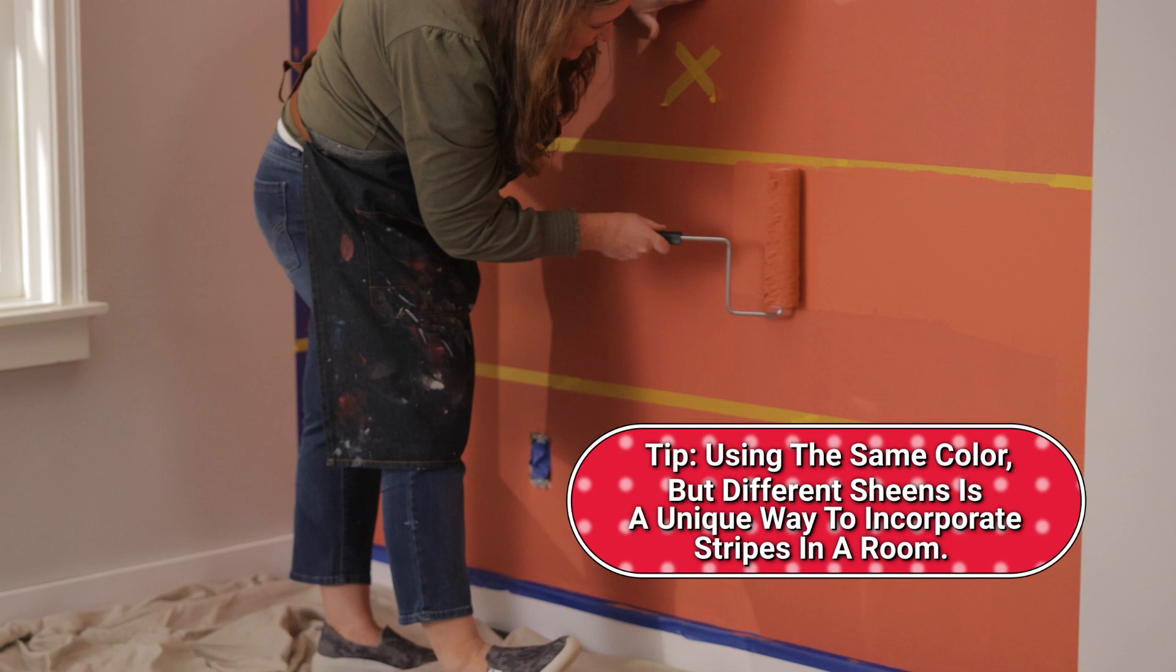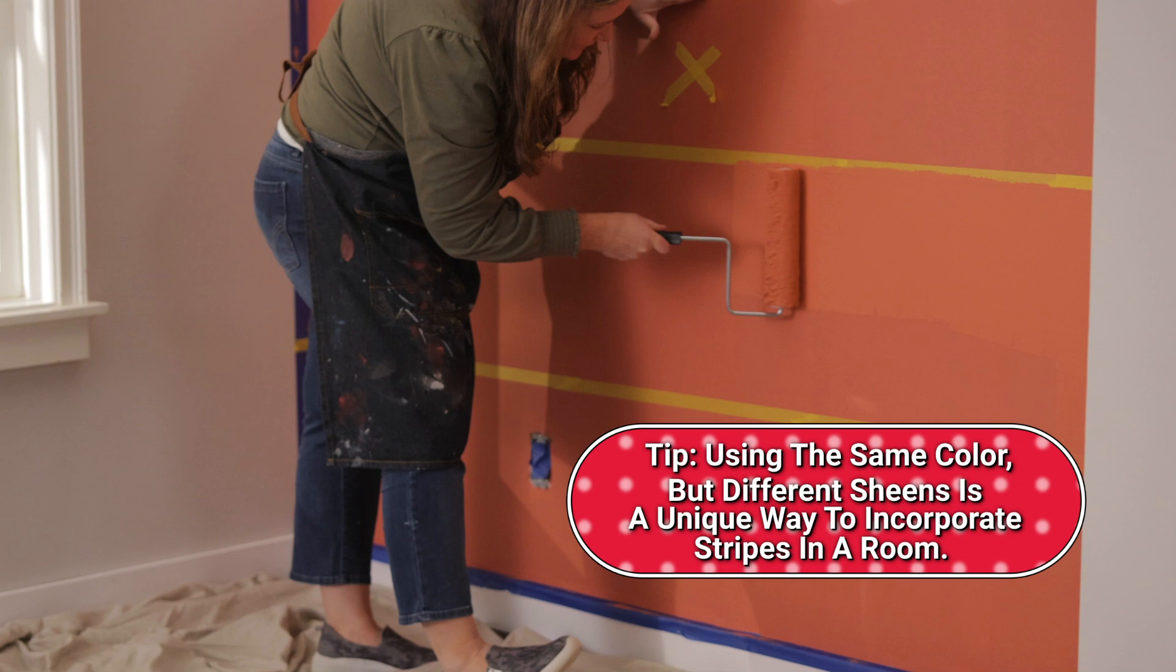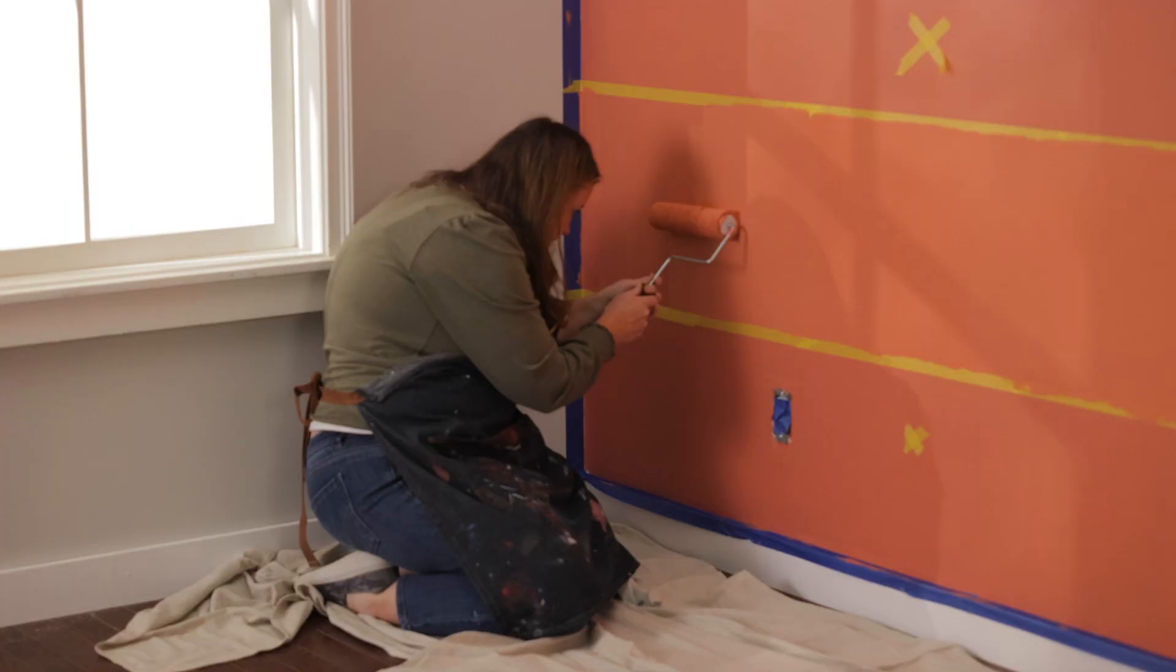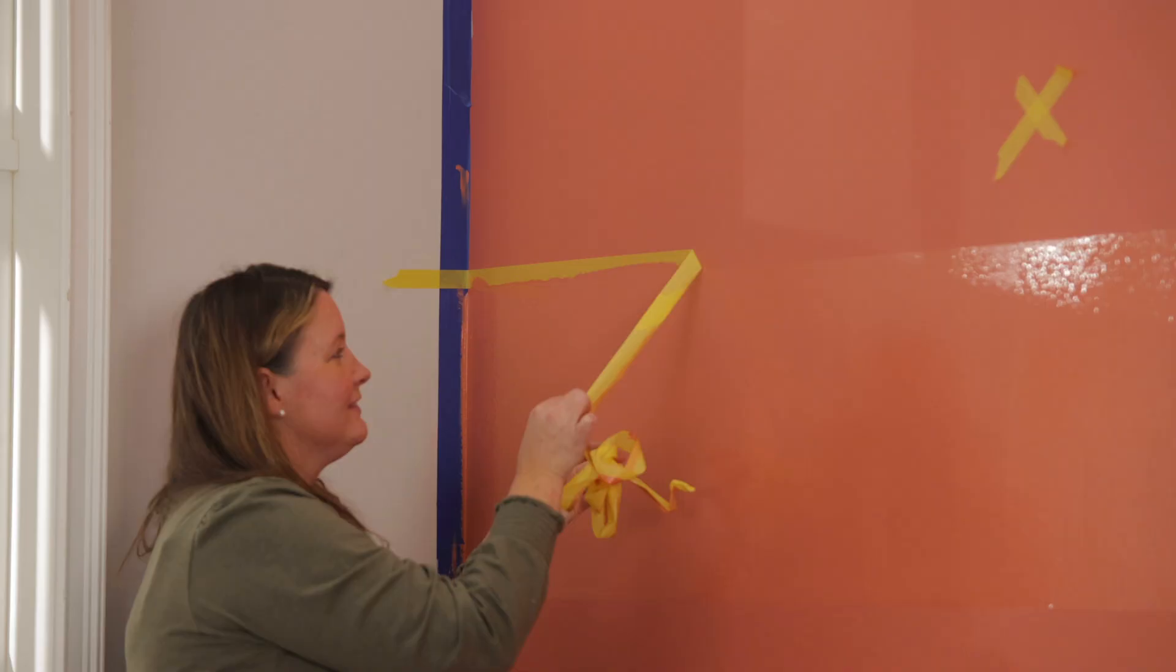I decided to use the same color which is Clark and Kensington's New Beginnings. I'm going to use semi-gloss paint. Start at the top of the stripe on one side and work your way all the way to the other covering everything in between the two lines.